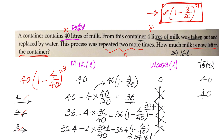This is the shortcut method. In the exam, if they give you this directly, you write: 4 by 40 is 1 by 10, which is 0.1; 1 minus 0.1 is 0.9. So the answer is 40 into 0.9 into 0.9 into 0.9, which you can calculate within 20 seconds: 36, 32.4, 29.16 is your answer.